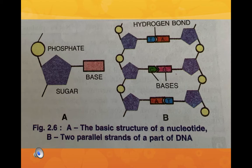The bases are A, T, C, and G — adenine, thymine, cytosine and guanine. Adenine always pairs with thymine (AT) with two hydrogen bonds, and guanine always pairs with cytosine with three hydrogen bonds.